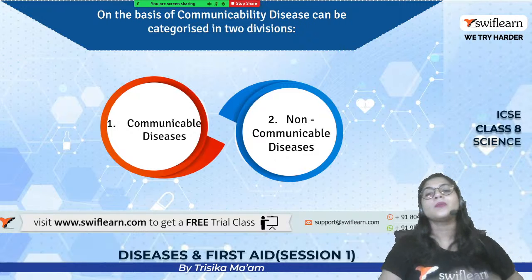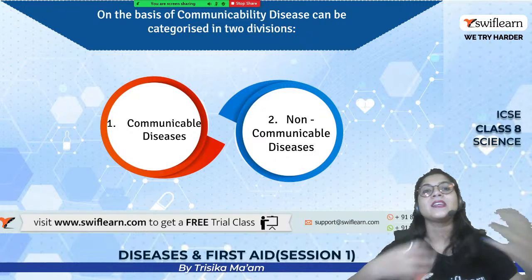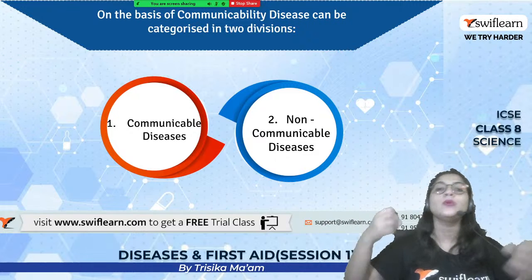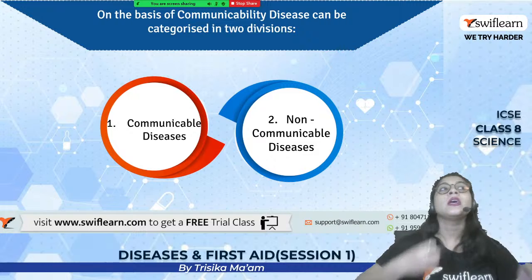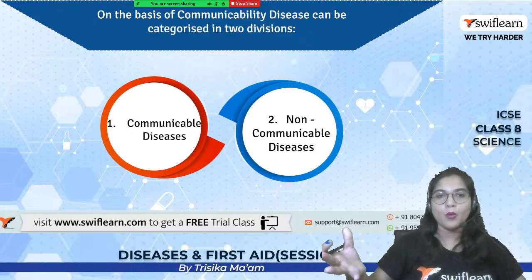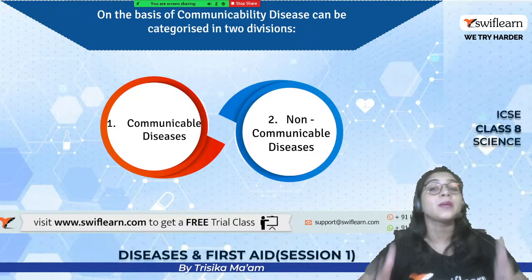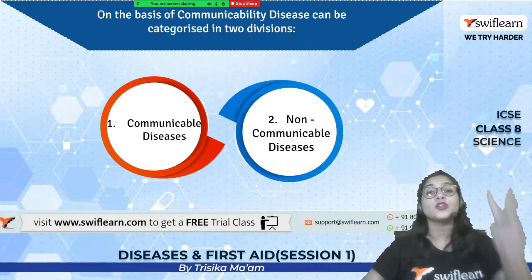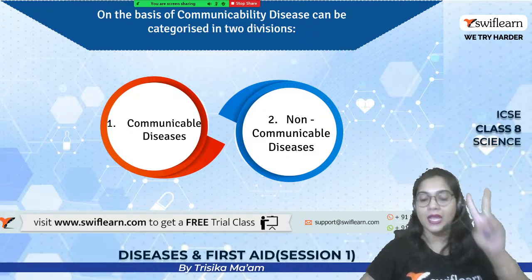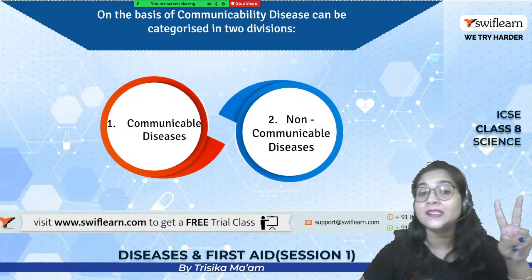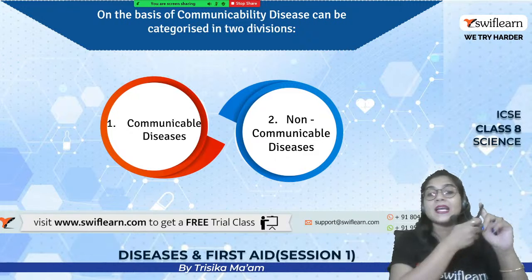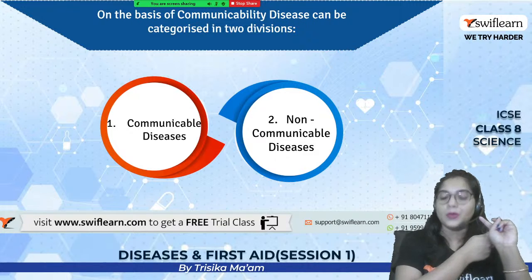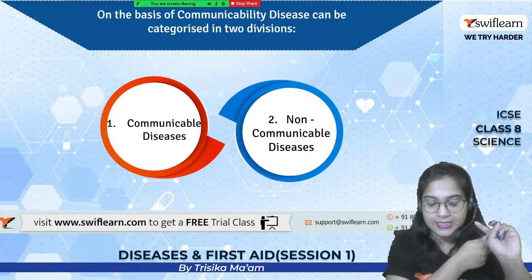On the basis of how diseases spread in communities, we can divide diseases into two main types: communicable disease and non-communicable disease.